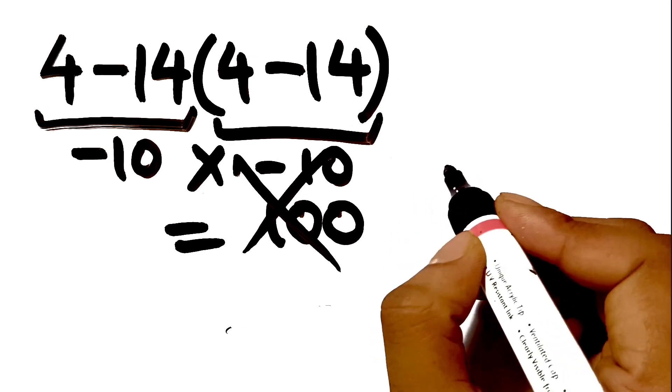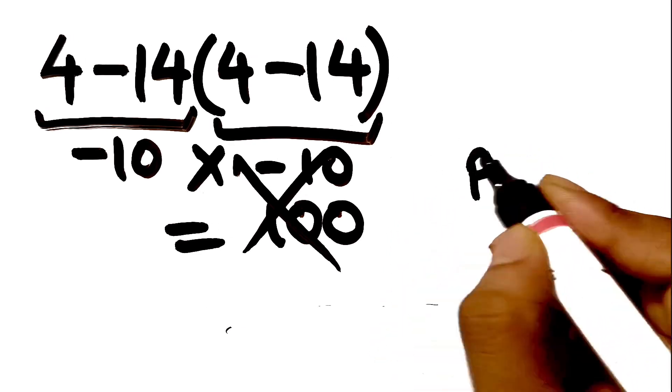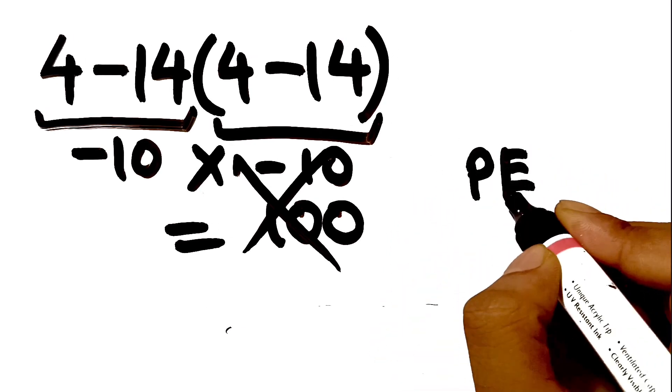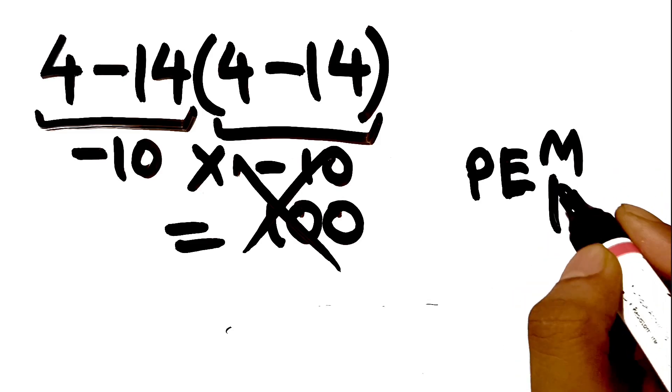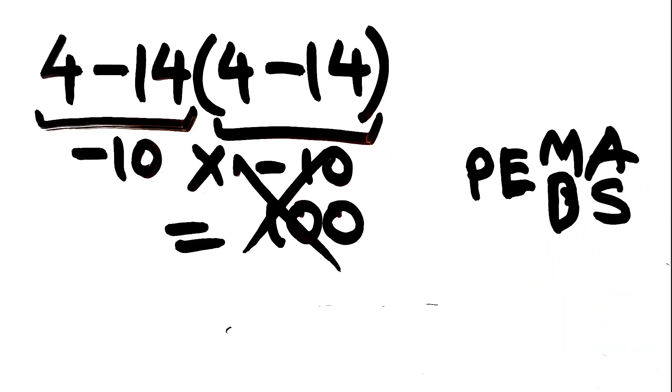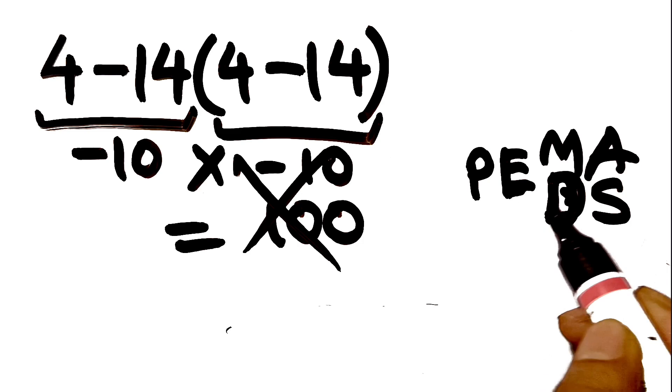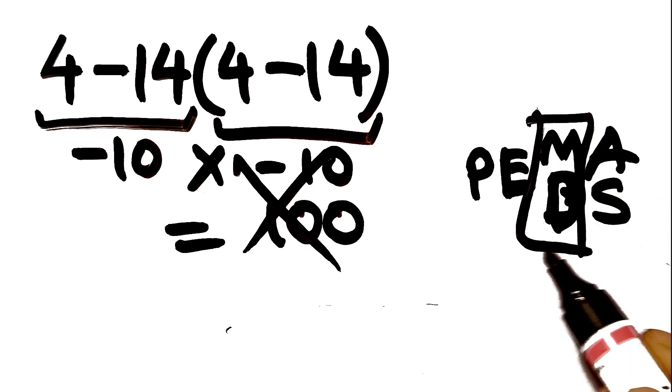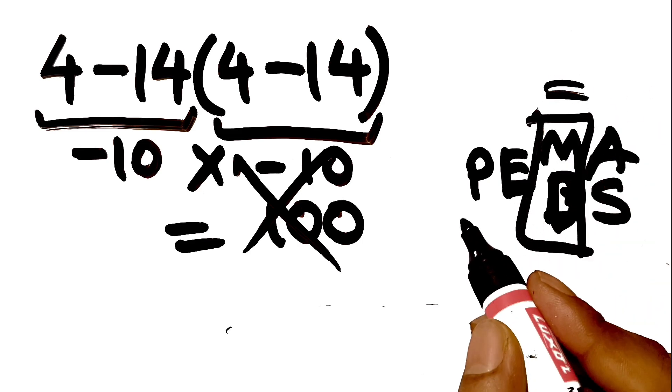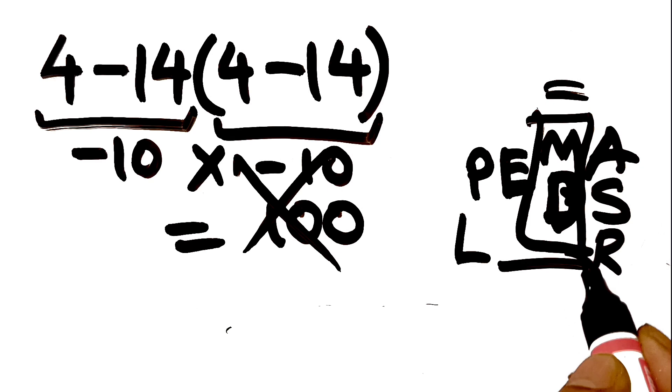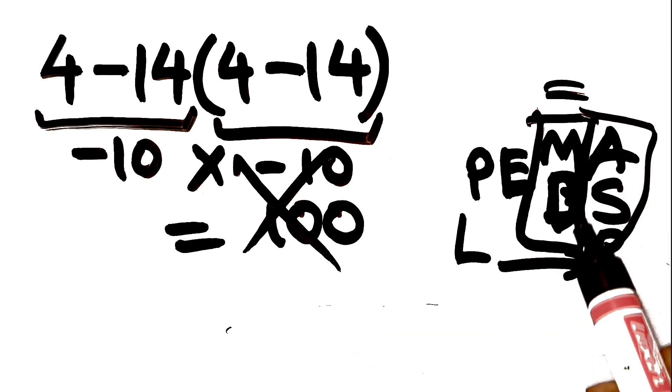Because according to the order of operations, first we have to do parenthesis, then exponents, then multiplication or division, and finally addition or subtraction. Remember that multiplication and division have equal priority and we have to work from left to right, and the same applies to addition and subtraction.